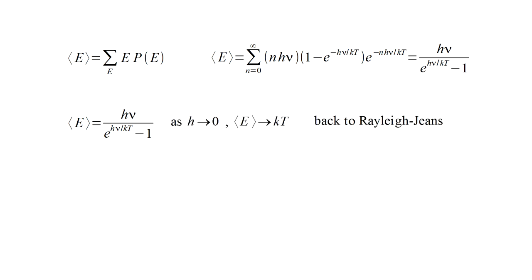Unfortunately, if we complete our bookkeeping trick by letting h shrink to zero, this expression reduces to kt. And we are back to the Rayleigh-Jeans law, which is what we were trying to fix in the first place.